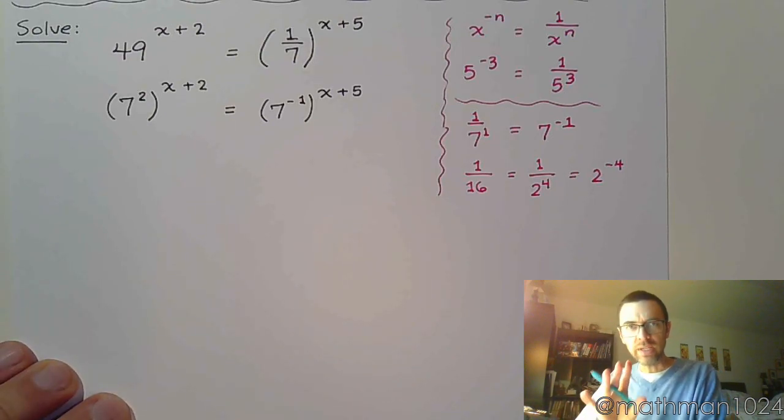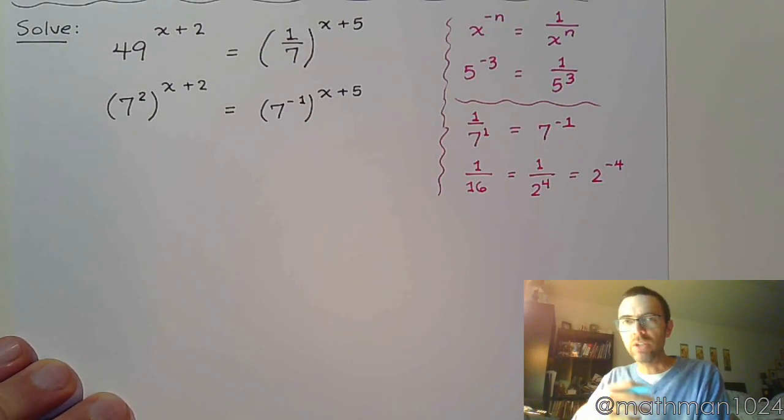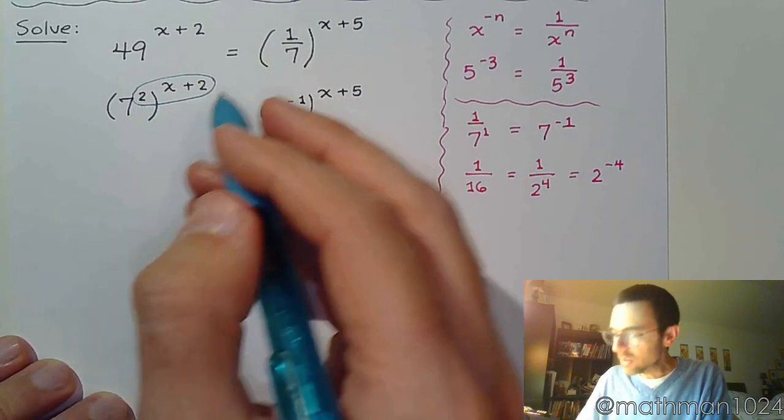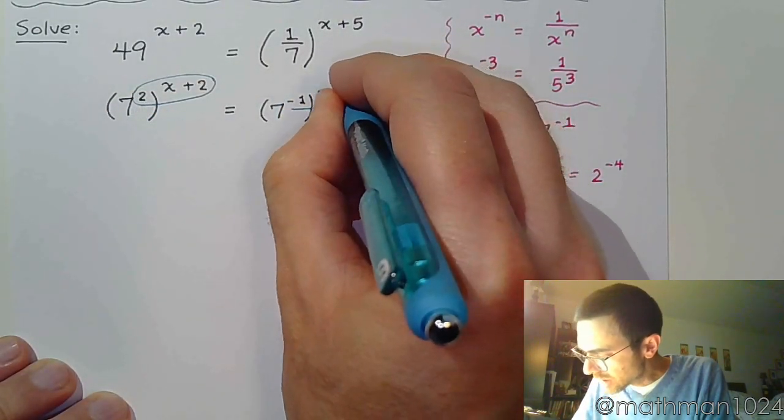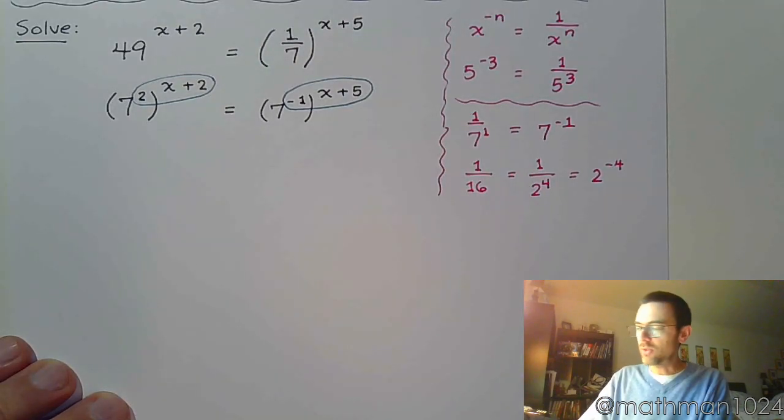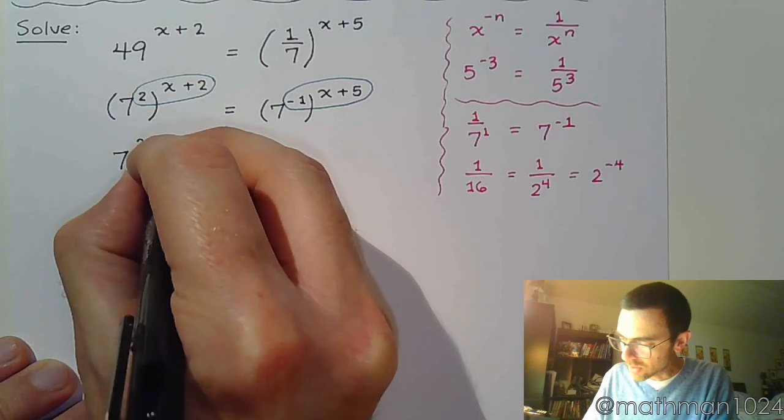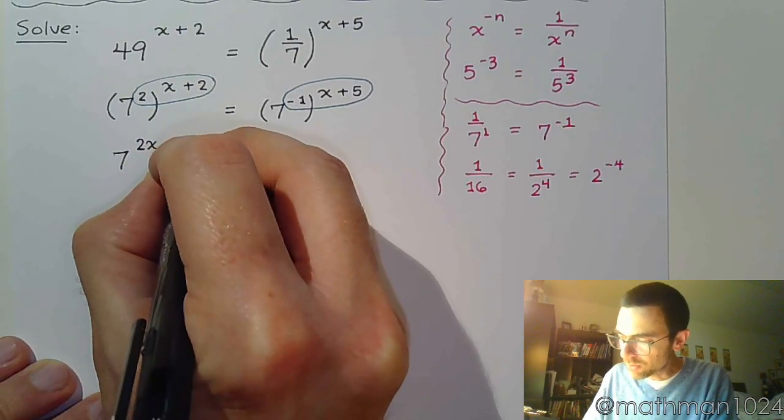All right. So we've now written each side with a common base of 7, and we don't have the 7 in the denominator. We don't have it inside of a radical or anything weird. And so now we have a power to a power. So we're going to have to multiply these, and we'll have to do the same thing on the right side.